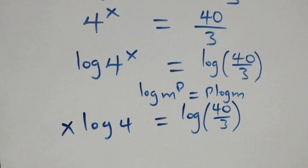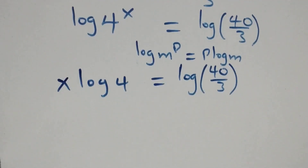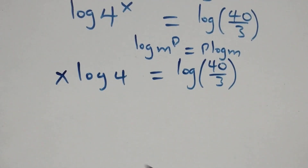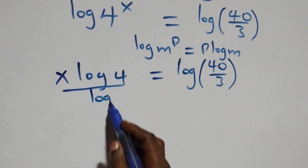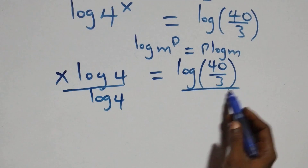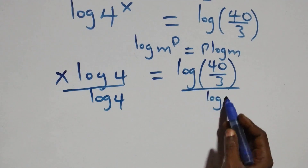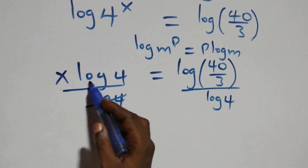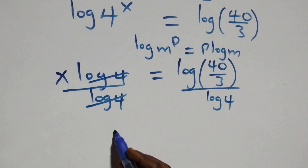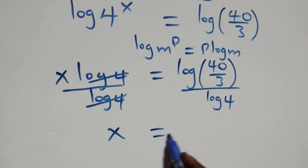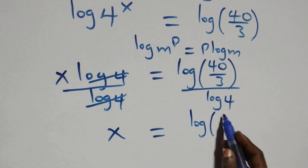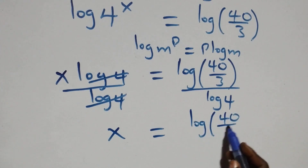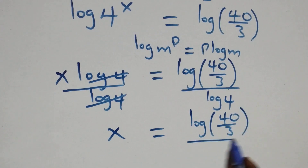The next step, we divide this side by log 4, and also divide this side by log 4. The log 4s cancel each other, and x is left, which equals log(40/3) divided by log 4.